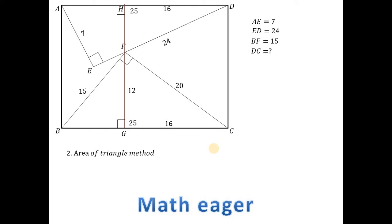Now then, join a line A and F. Then triangle AFD, the area of triangle AFD is half of FH into AD. Triangle AFD is also half of AE and FD. One upon two, one upon two cancel. And AE is 7, and AD is 25.